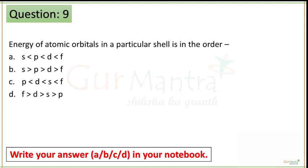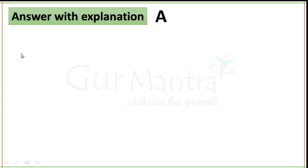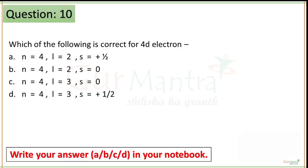Time up guys. This is a very important and easy question. The energy of atomic orbitals in a particular shell is in the order given in option A, as the s subshell has the least energy. So the correct option is option A. Our last question is question number 10 — your time starts now.